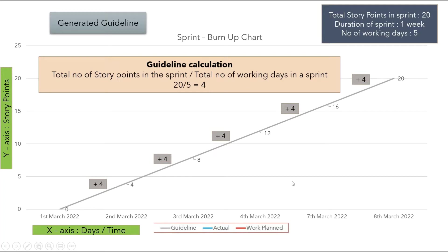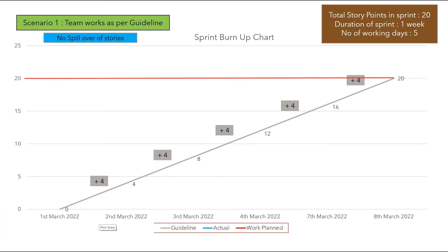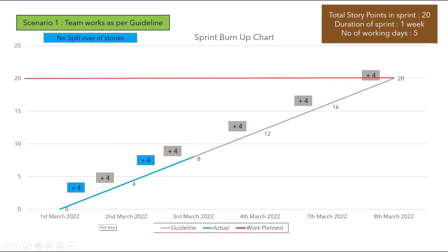Now let us see how the actual line looks for different scenarios based on team performance. In scenario 1, the team works exactly as per the guideline. The team will burn up or complete exactly 4 story points every day so that they complete all 20 story points by the end of the sprint. Here the actual line completely covers the guideline, and there is no spillover of user stories — the team completes all user stories successfully.